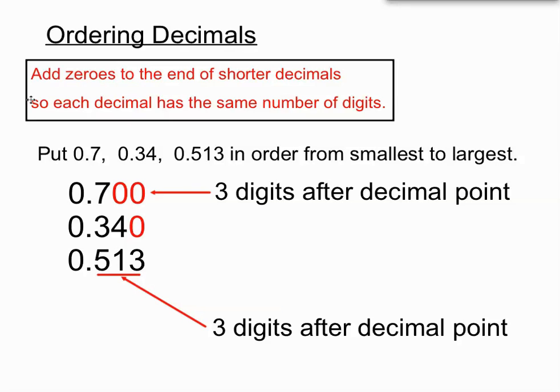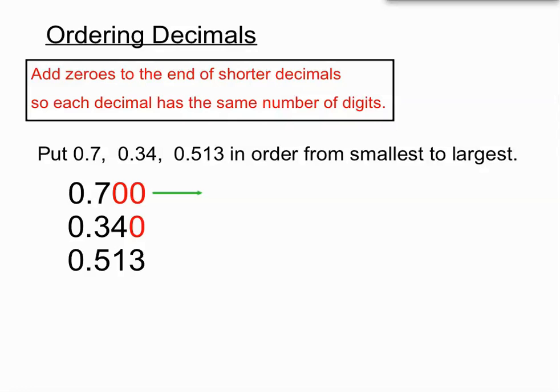We are also going to put a zero just after the 0.34. So each of those numbers now has 3 digits after the decimal point. We are allowed to put those extra zeros at the end of any decimal. And what we can do now is kind of ignore the zero and the decimal point in each of them and just compare the sizes of those 3 digits that are after the decimal point.